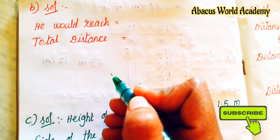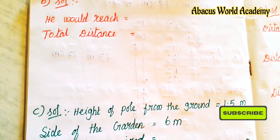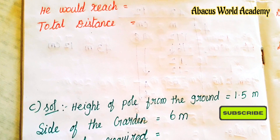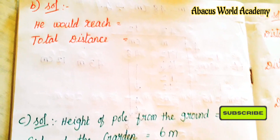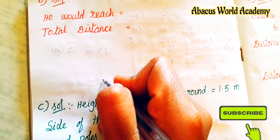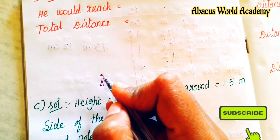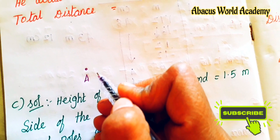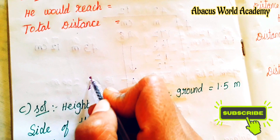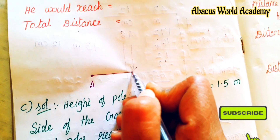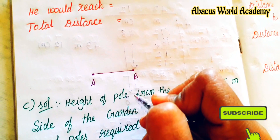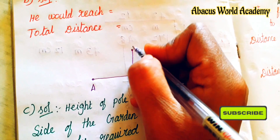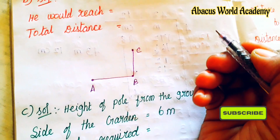So A is the starting point in the travel path. He moves 1 km east to reach B. Next, 2 km towards north in the travel path, and reaches C.